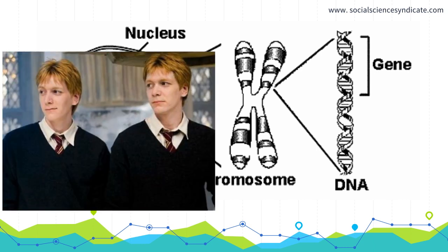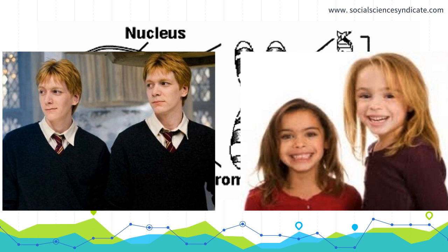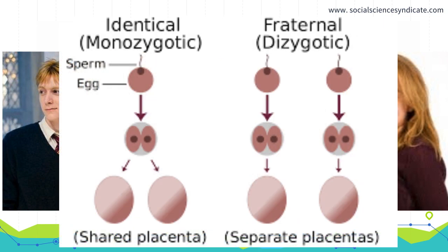Let's take a look at Fred and George Weasley, two characters from the Harry Potter series — they're an example of identical twins. Over here, these two girls are examples of fraternal twins. Fred and George came from the same egg fertilized by the same sperm. The two girls came from two eggs fertilized by two different sperm. Although they grew up in the same womb, they developed from different genetic codes. The question psychologists ask is: to what extent do the different DNAs of twins determine their behavior?